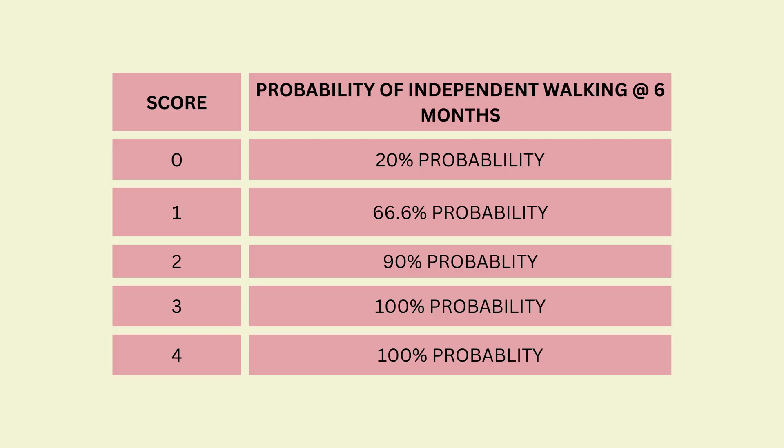Based on the scores tabulated from the results of the study, these are the probabilities — or chances — of the patient actually walking independently at 6 months.